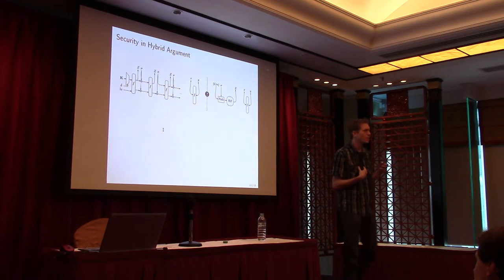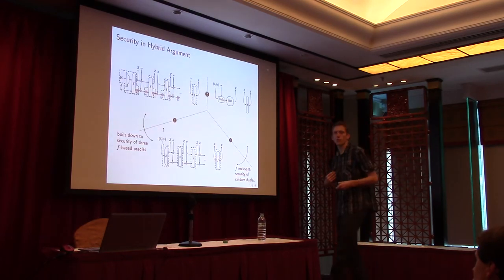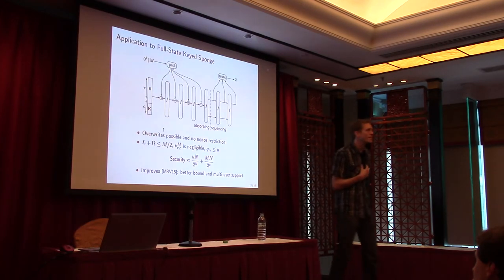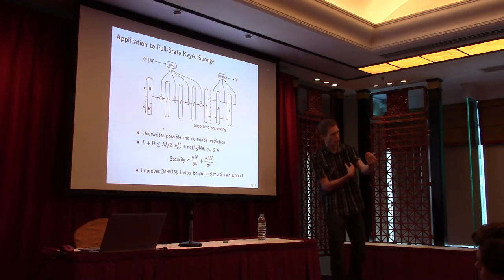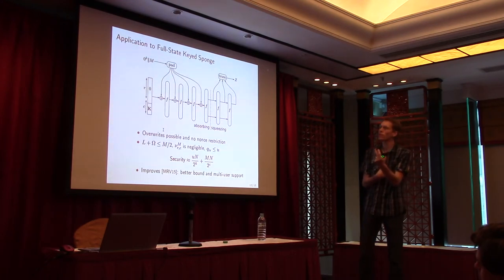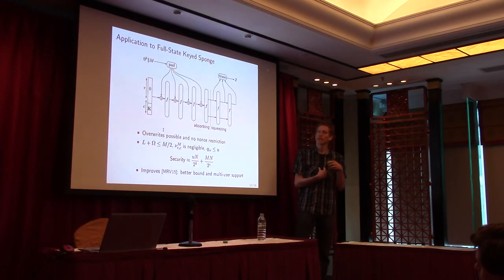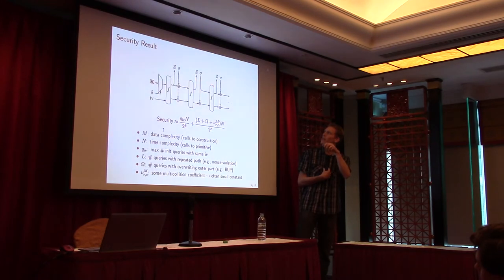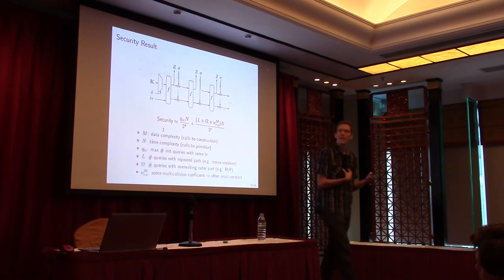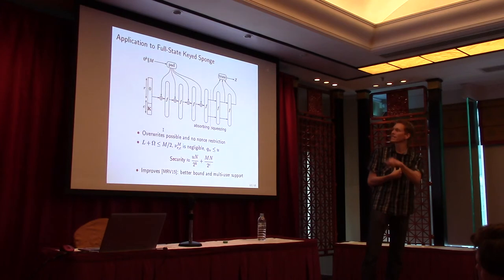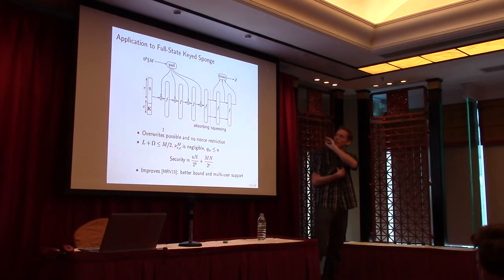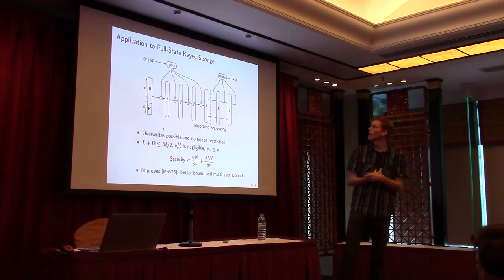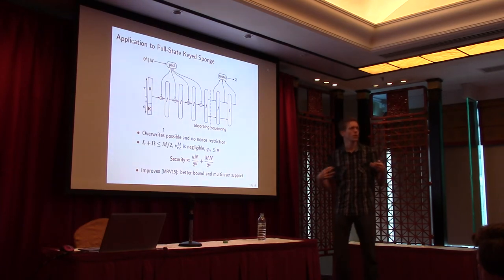I have some slides on the proof idea but I will skip them to go to the applications. One application is on the full state keyed sponge, because there is a relation between the duplex and the sponge — you can exchange the bounds. If you look at a duplexing call where you either do not absorb any data or do not extract any data, you get a sponge. So we can use our new bound for the sponge as well. This is the general case with a key array for multi-key security.